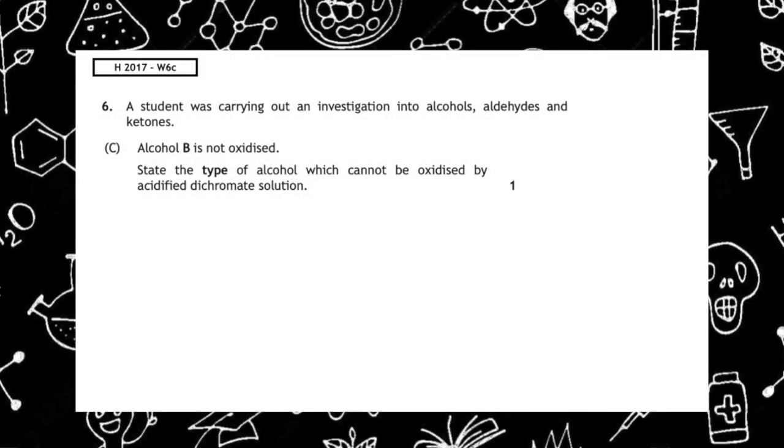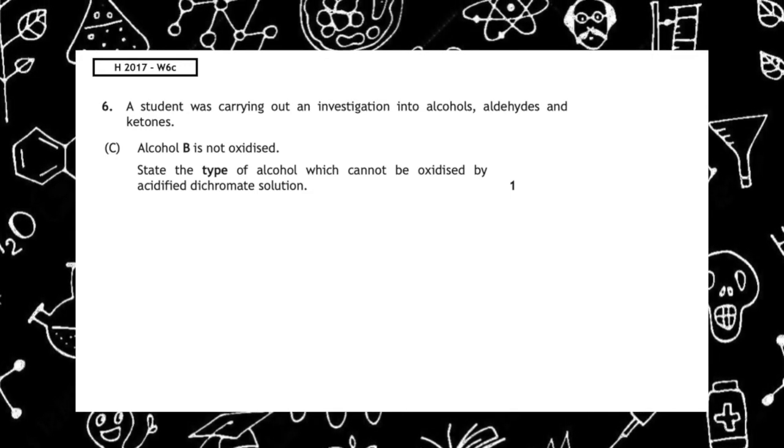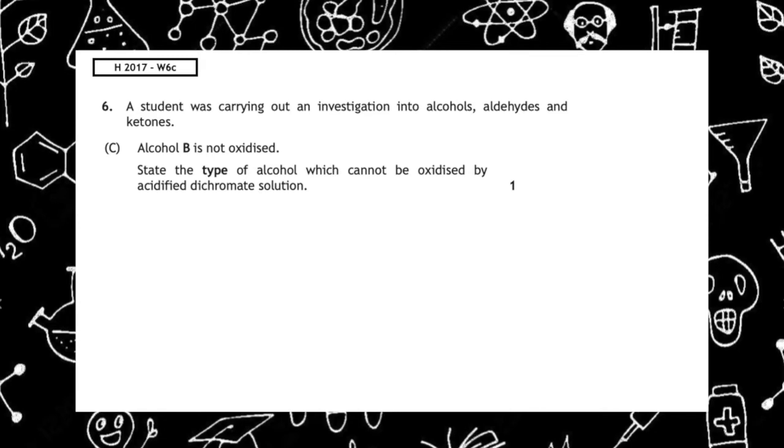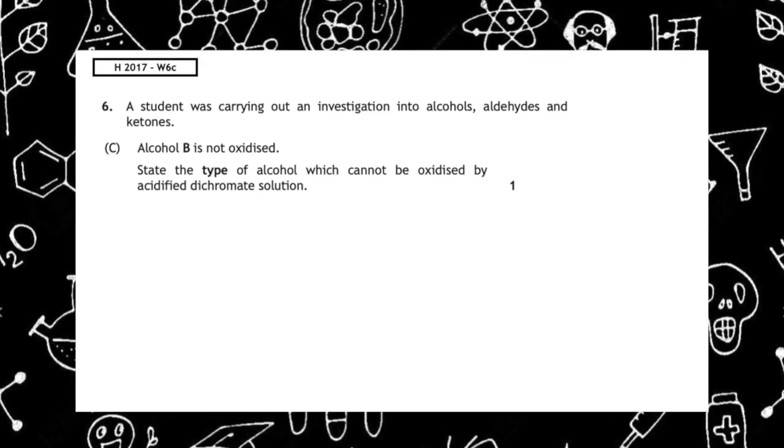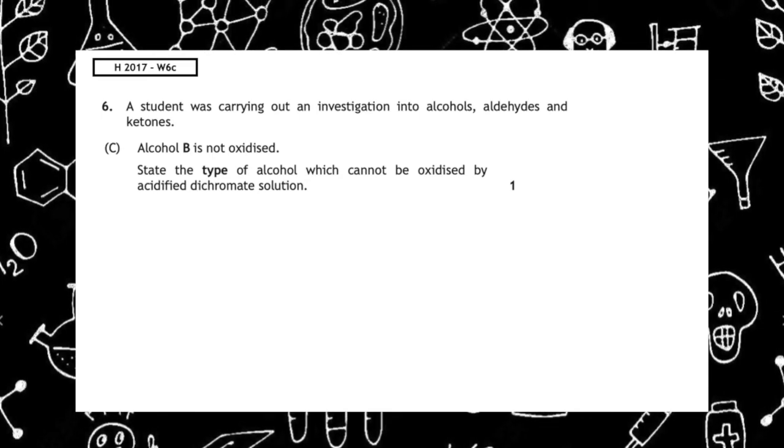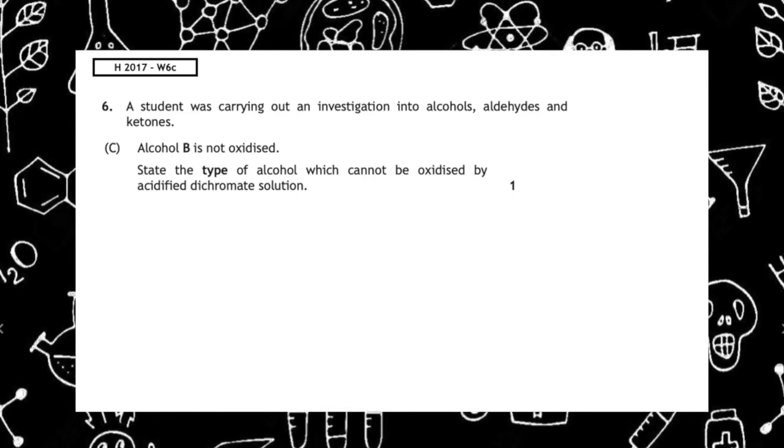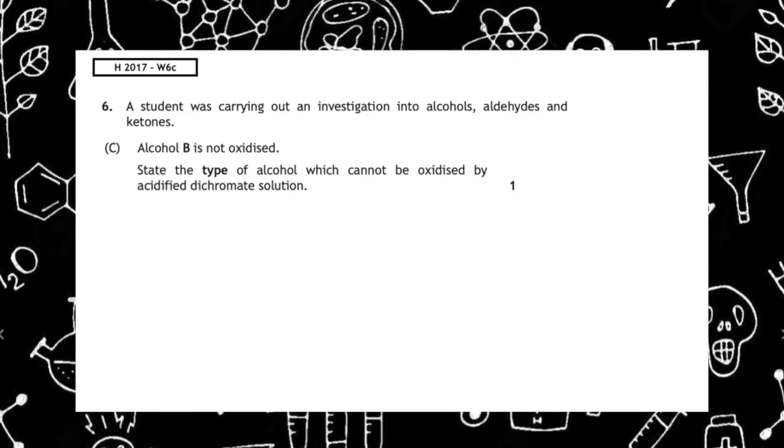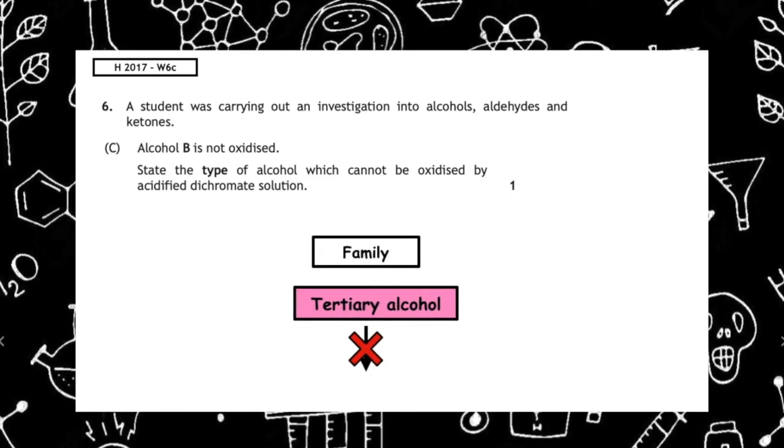This past paper question is from the Higher 2017 Written 6C. A student was carrying out an investigation into alcohols, aldehydes, and ketones. Alcohol B is not oxidized. State the type of alcohol which cannot be oxidized by acidified dichromate solution. The type of alcohol which does not undergo any step of oxidation is a tertiary alcohol.